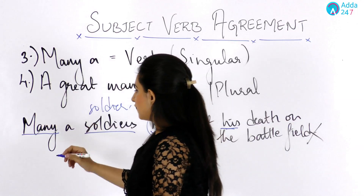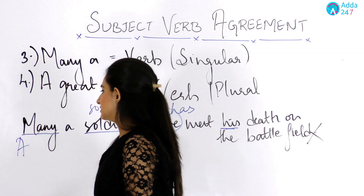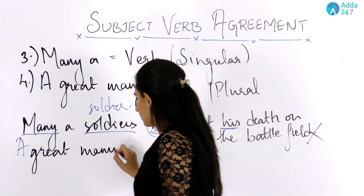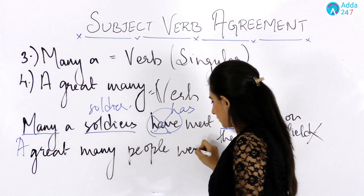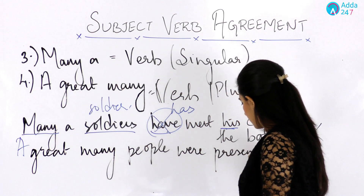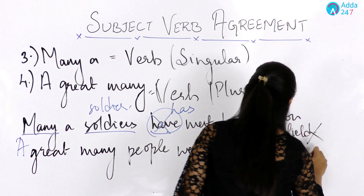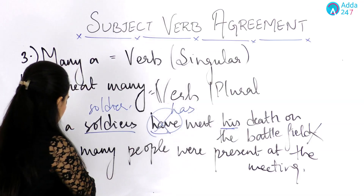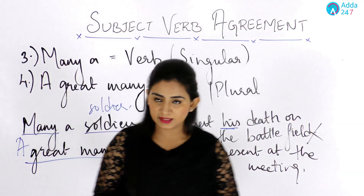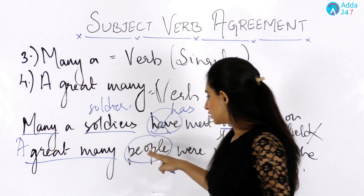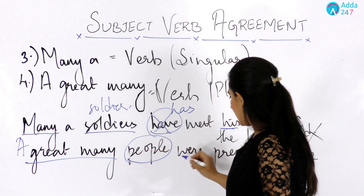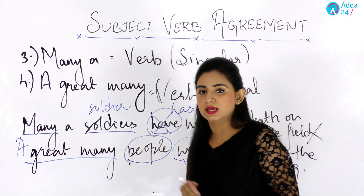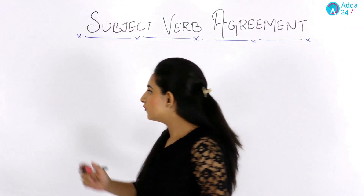On the other hand, 'a great many' follows a plural form of verb. For example, 'A great many people were present at the meeting' is correct. With 'a great many', the noun should be plural and the verb should be plural as well.